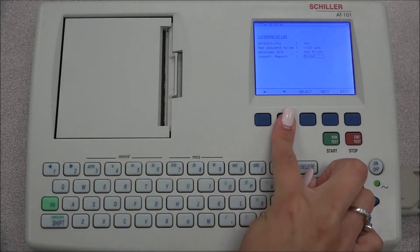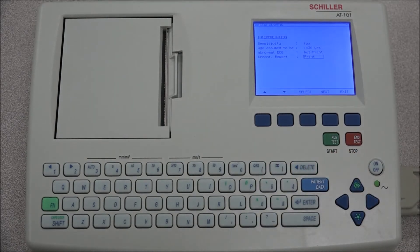The option to have a statement saying abnormal ECG or unconfirmed report in the printout can be selected. If the thrombolysis software is installed, it can be turned on or off under this tab.